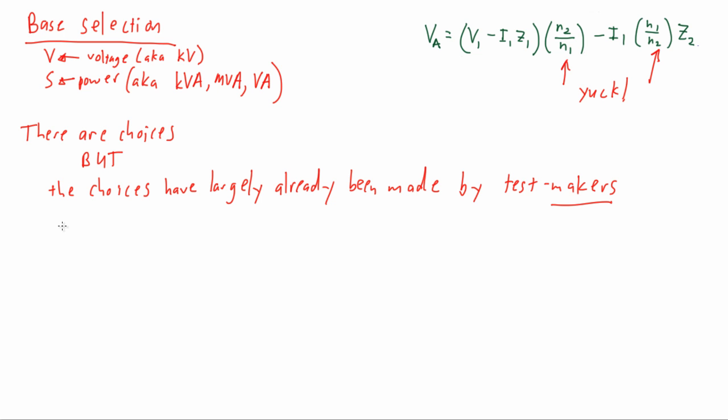What this means really to the studying engineer for the PE is you need to not only know how to employ the per unit method generally, but you also need to know how to employ it the way they tell you to employ it for the PE. The PE is going to force you into doing this method in a particular way, and you have to understand the choices they have made, the PE has made, on your behalf. So even though this is a choice-based method, especially as it relates to the bases and so forth, oftentimes those choices are going to be made for you.